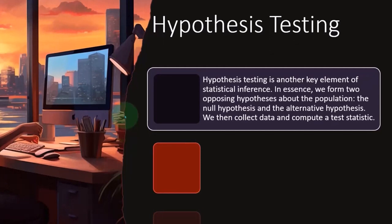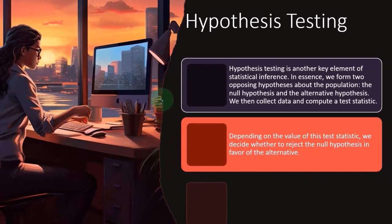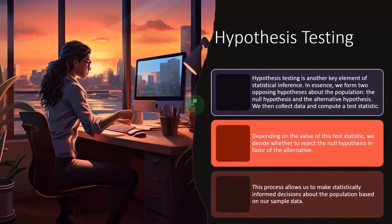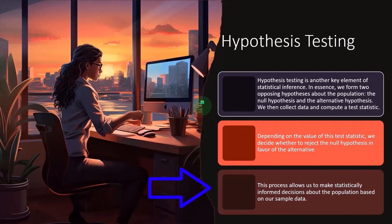And then we're going to run multiple tests from that point to see what happens. So depending on the value of this test statistic, we decide whether to reject the null hypothesis in favor of the alternative. This process allows us to make statistically informed decisions about the population based on our sample data.